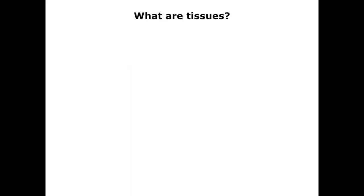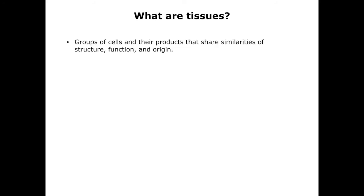Now that you have an idea of how slides are prepared, let's go back and consider the nature of tissues. A formal definition is that tissues are groups of cells, along with the products that they produce, that share similar structures, functions, and in some cases, embryonic origins. This is a complicated set of criteria, which may not be all that helpful to you. To make things more concrete, histologists have determined that there are only four tissues found in the body. You'll better understand what tissues are as we study each one over the next few weeks, and then look at all the organ systems in turn.